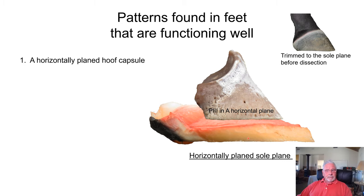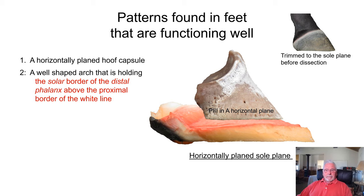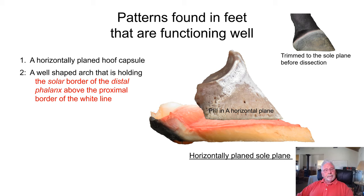The next thing to look for in a foot that's functioning well is a well-shaped arch holding the solar border of the distal phalanx above the proximal border of the white line. The distal phalanx — also called the coffin bone or P3 bone — will have a horizontal plane. This is very rare to find in horses. One of our goals would be to maintain a horizontally planed P3 bone, because that distributes all of the stresses on the bottom of the foot evenly, with less stress to the soft tissue.